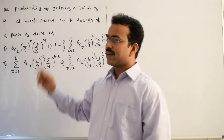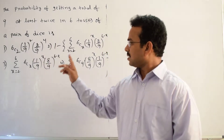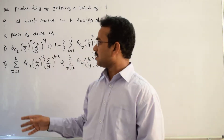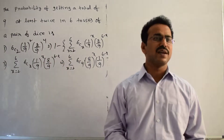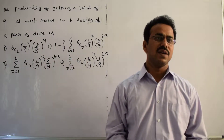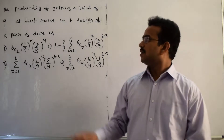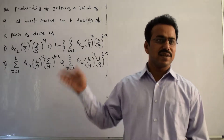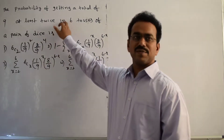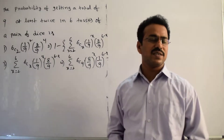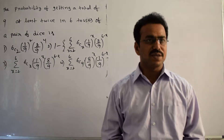They have provided options. Once you observe the options, clearly all options belong to binomial distribution. So the random variable in the given probability distribution follows a binomial distribution.